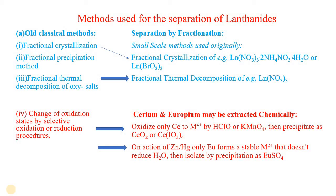The next classical method is fractional thermal decomposition of oxy acids. By heating, the oxy acids are decomposed, and these compounds further change into free metal by reduction methods. This is usually done for lanthanide nitrates: when heated, the lanthanide nitrates decompose into lanthanide oxide and oxygen, and the oxide can then be reduced into pure lanthanides.